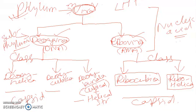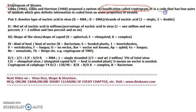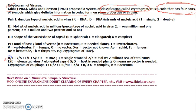Now we move on to the last part: cryptograms of virus. This is a very important part. The cryptograms were given by Gibbs and Harrison scientists. It is a proper naming or nomenclature system for virus. The virus is named in the form of four coded pairs. These symbols denote the nature of the virus classification. For example, for TMV, the cryptogram is written as R/1, 2/5, E/E, S/O.